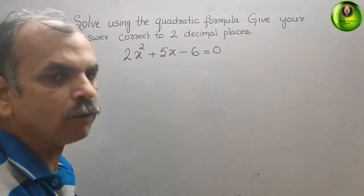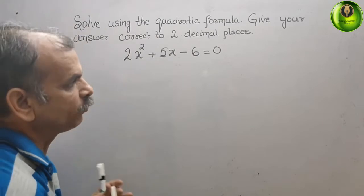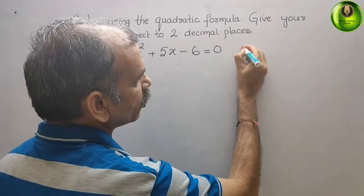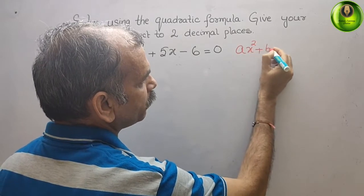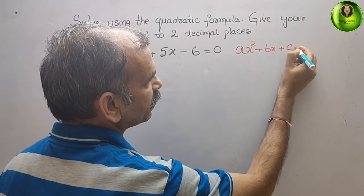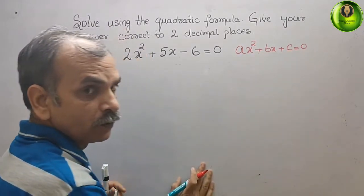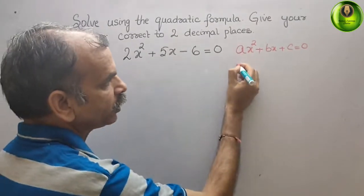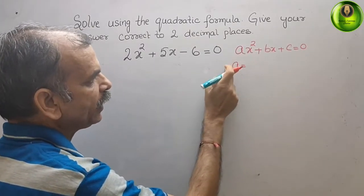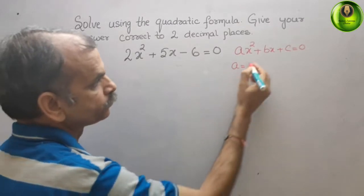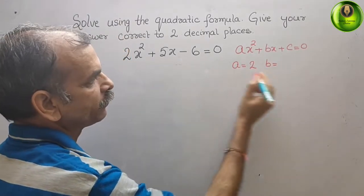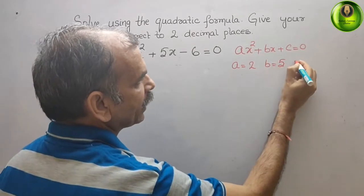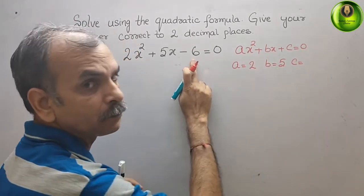The standard form of quadratic equation is ax² + bx + c = 0. Now compare it. What is your value of a? a is 2. What is your b? b is 5. And c is -6.